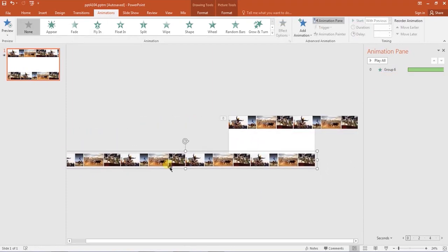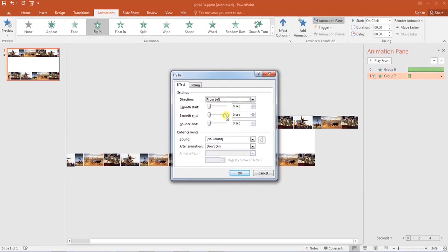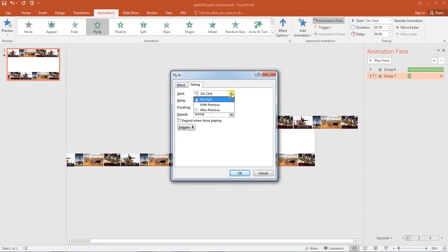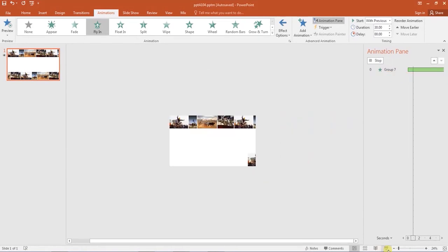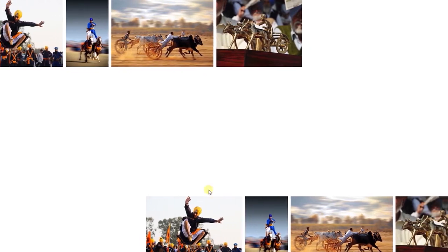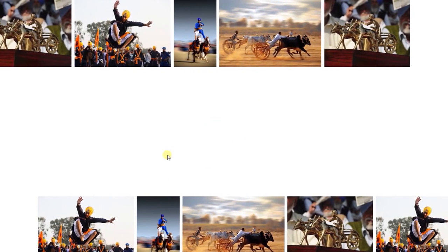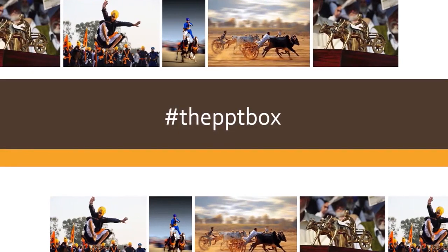You will have to apply the animation effect again to this new group. After you apply the effect, you can see that the images are moving faster. The point we learned here was: longer the duration of animation, slower will be the animation, and vice versa.